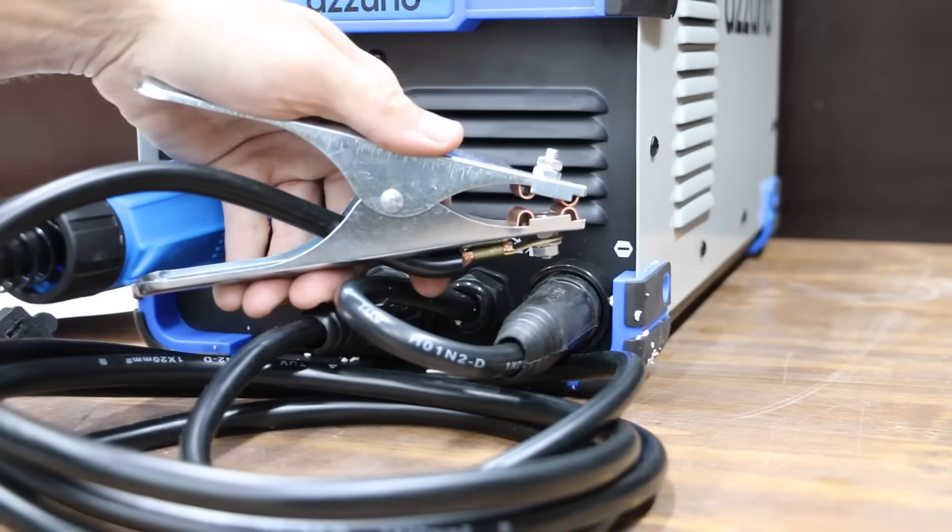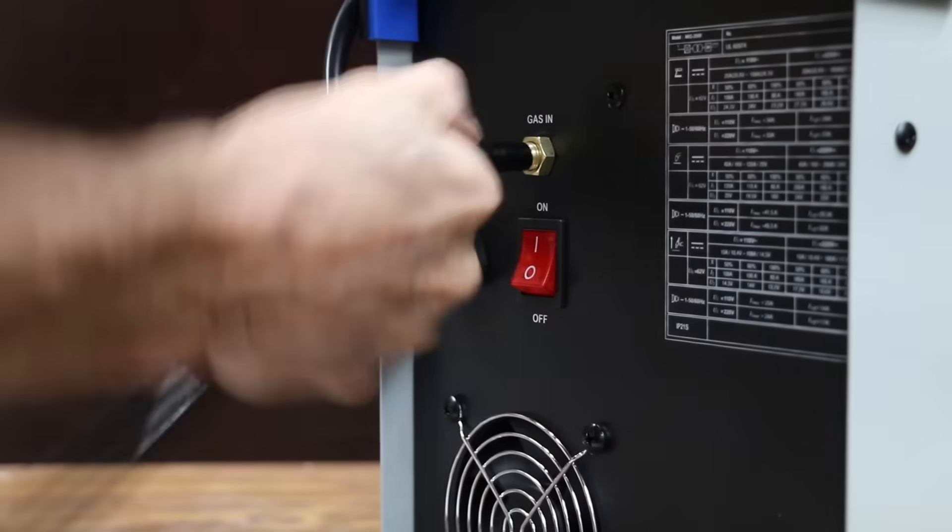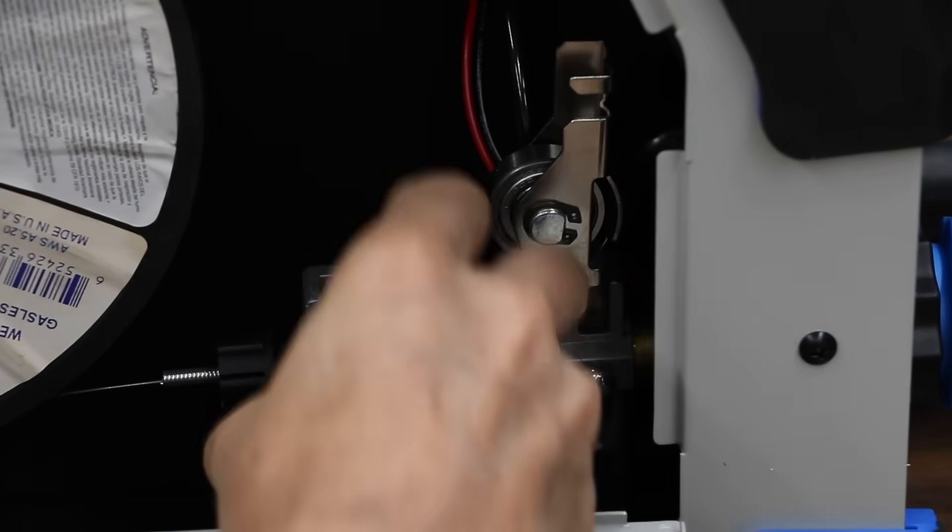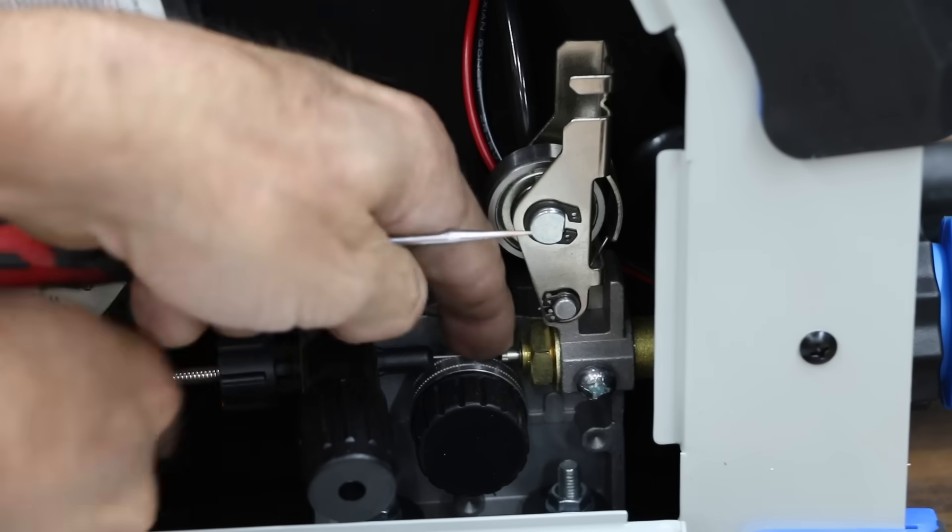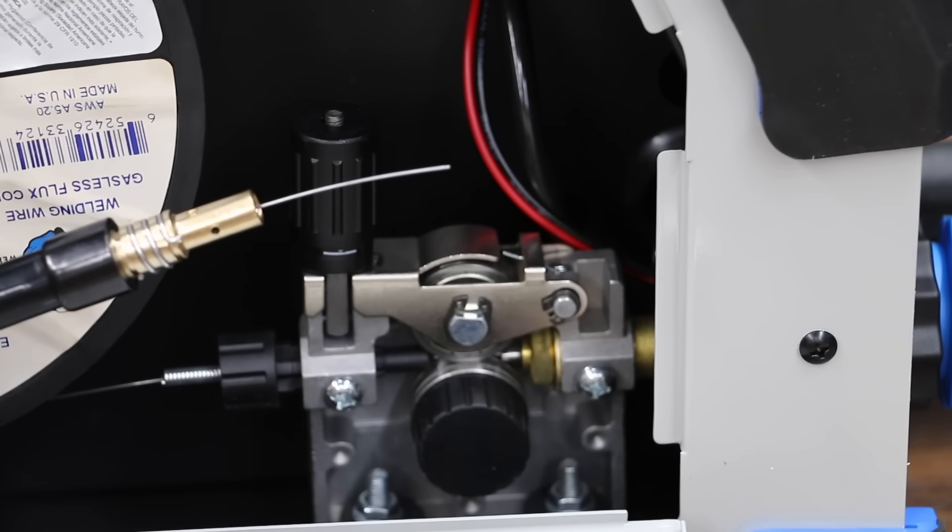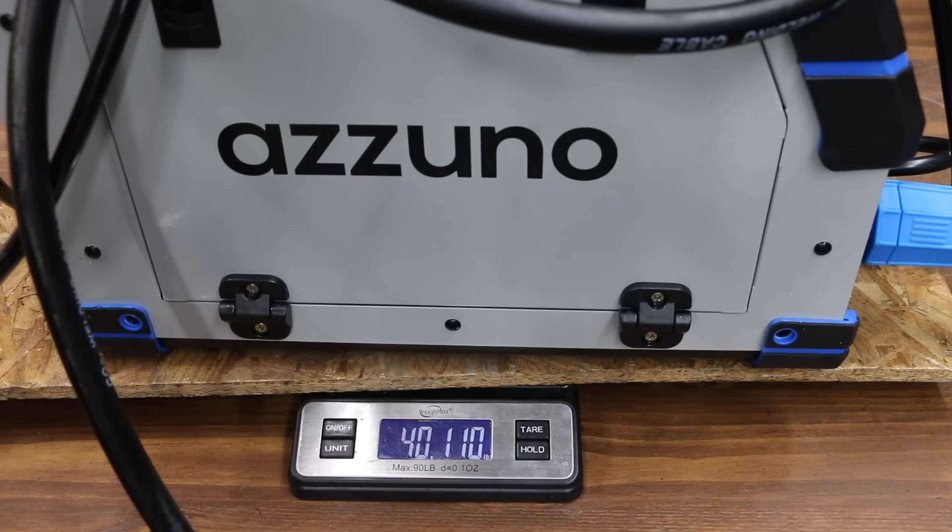Just like the Chicago Electric, the Izuno uses a quarter-inch barb fitting for gas hookup. The Izuno claims to hold a 10-pound spool of wire and the 10-pound spool fits just fine. Just like the Chicago Electric, there's plenty of space for easy access to getting a new spool of wire fed into the gun cable. And the Izuno with 10 pounds of welding wire on board weighs very close to 40 pounds.